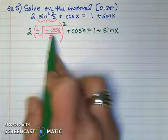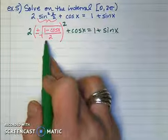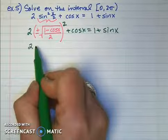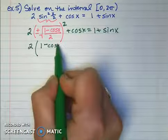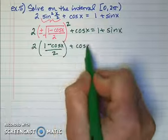I get the value inside, and the ± goes away because I'm squaring it. So I have 2(1 - cos x)/2 + cos x = 1 + sin x.